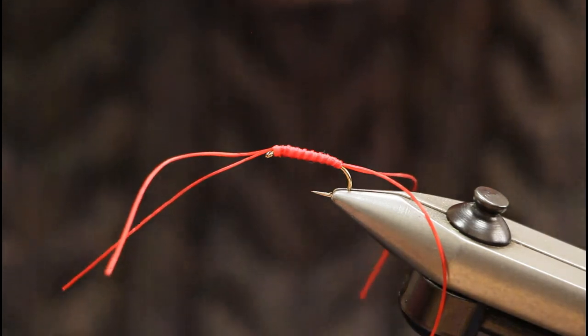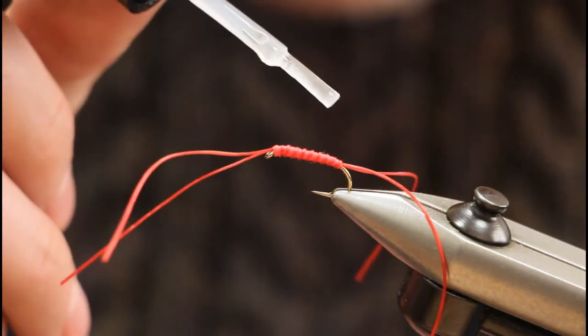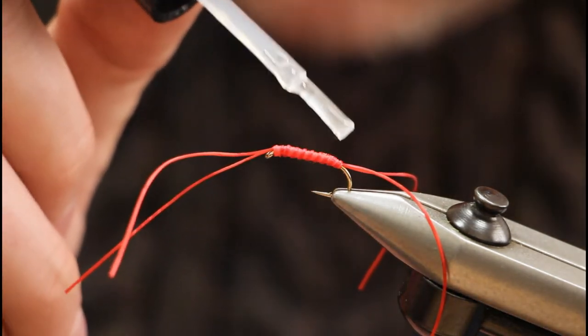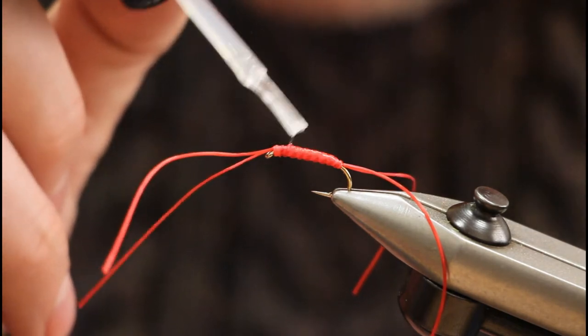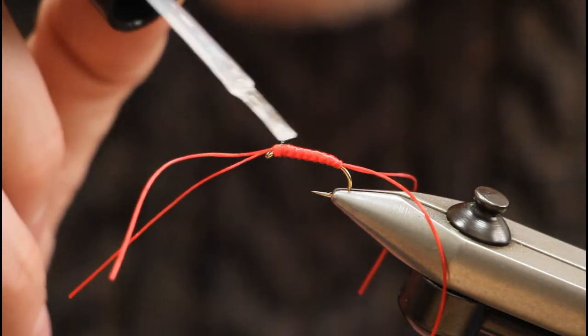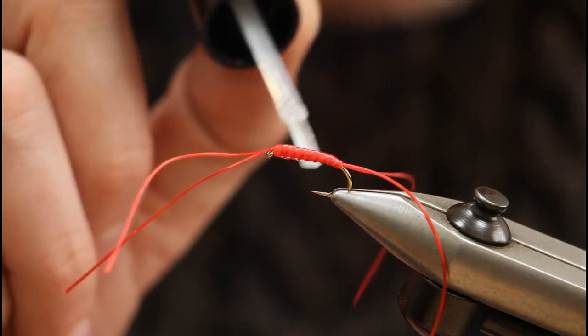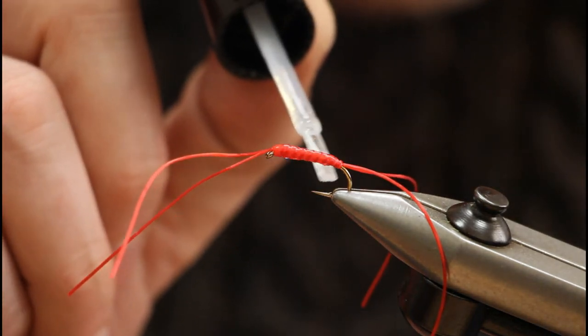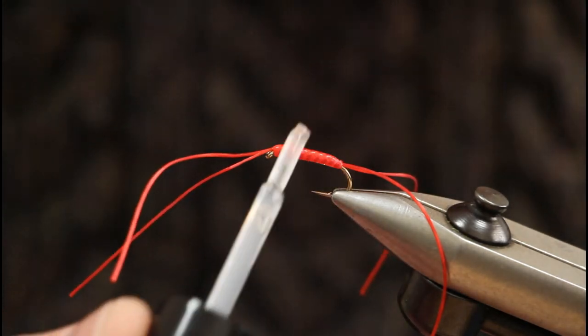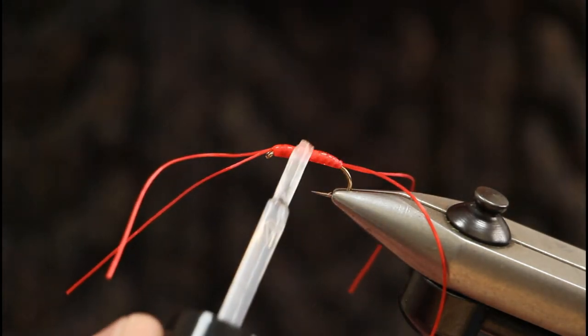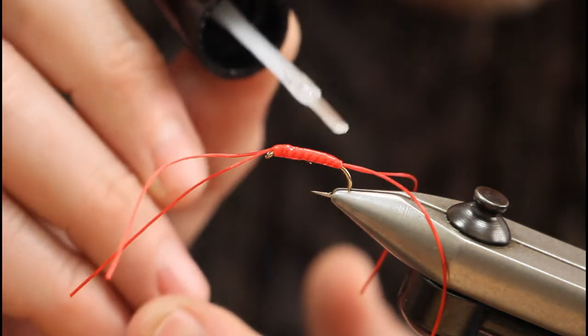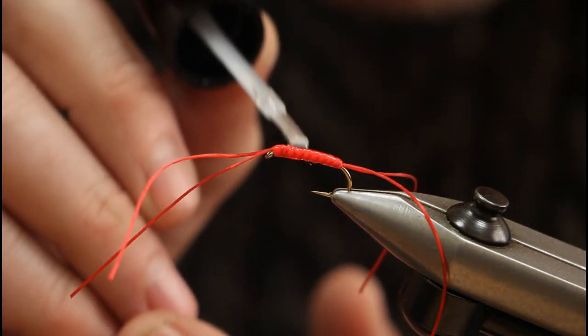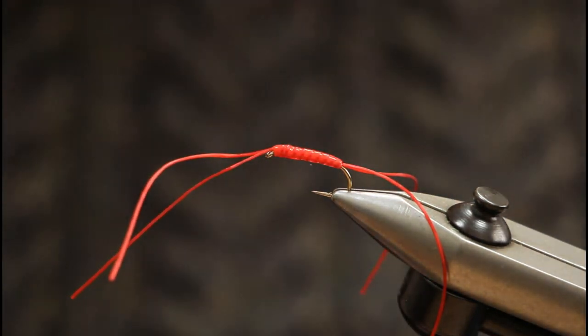To finish the fly, we just apply something like Sally Hansen Hard as Nails. You can apply maybe two or three coats. You could apply a coat of superglue first, then maybe a couple of coats of the varnish, or you could even use some UV cure resin. There we go, that's your finished fly.